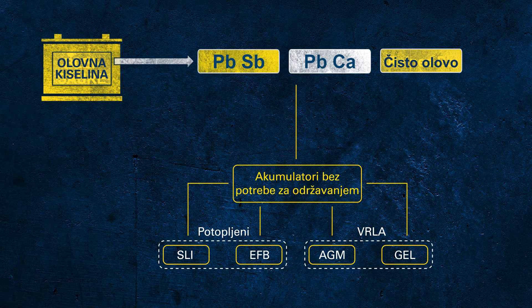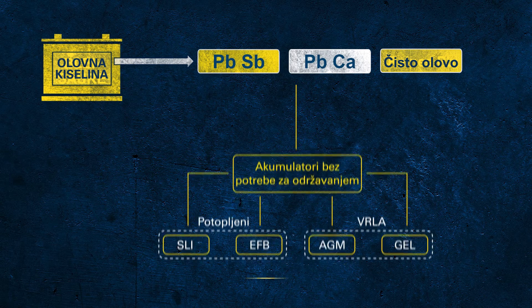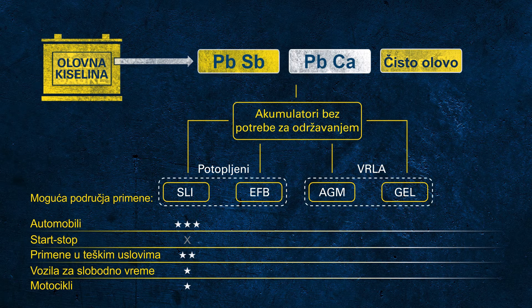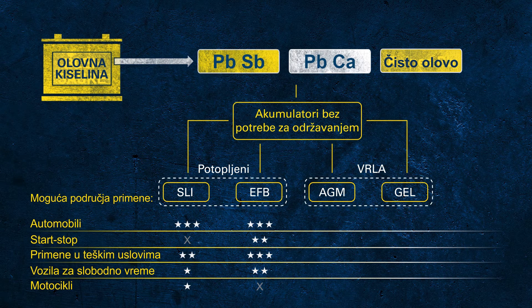As battery technologies differ, not every technology can properly support all applications. The SLI battery is great for conventional vehicles, but cannot be used in modern vehicles with start-stop functionality. In the EU, more than 90% of all newly manufactured vehicles come with start-stop systems to meet CO2 regulations. The EFB battery is an enhanced battery to support basic start-stop systems but reaches its limits in more aggressive start-stop systems or cars with many electrical consumers.